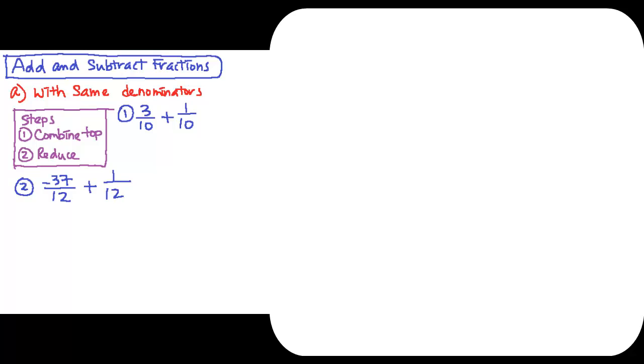First we are going to add and subtract fractions with the same denominators, such as number one. The step for this is, because they already have the same denominator, we just need to combine the top. After combining the top, we need to reduce it to the lowest term or the simplest form.